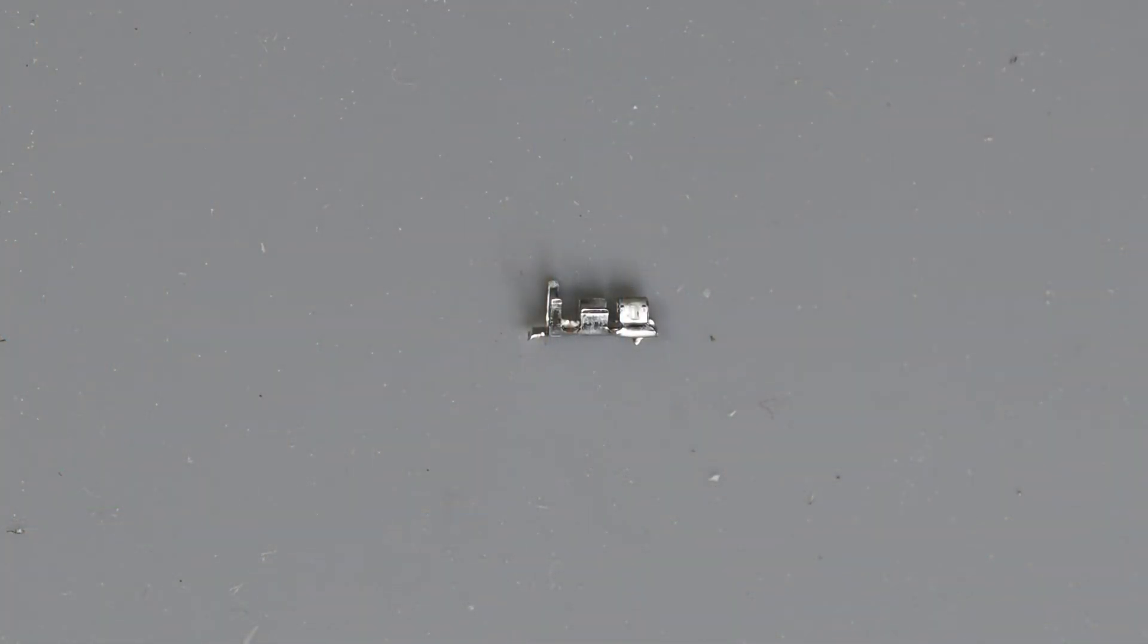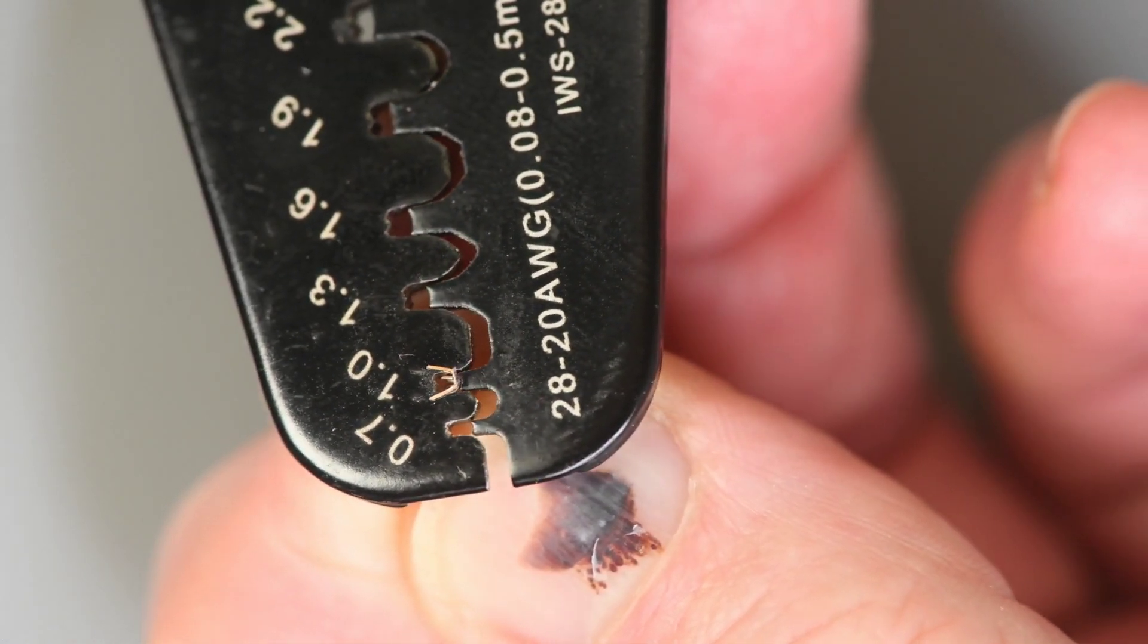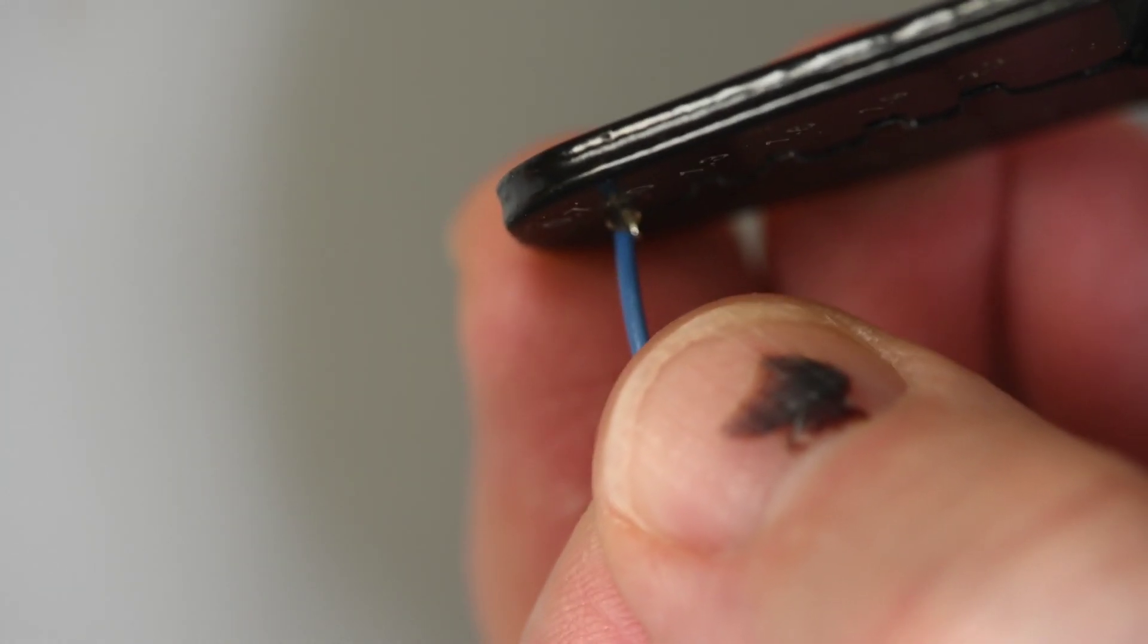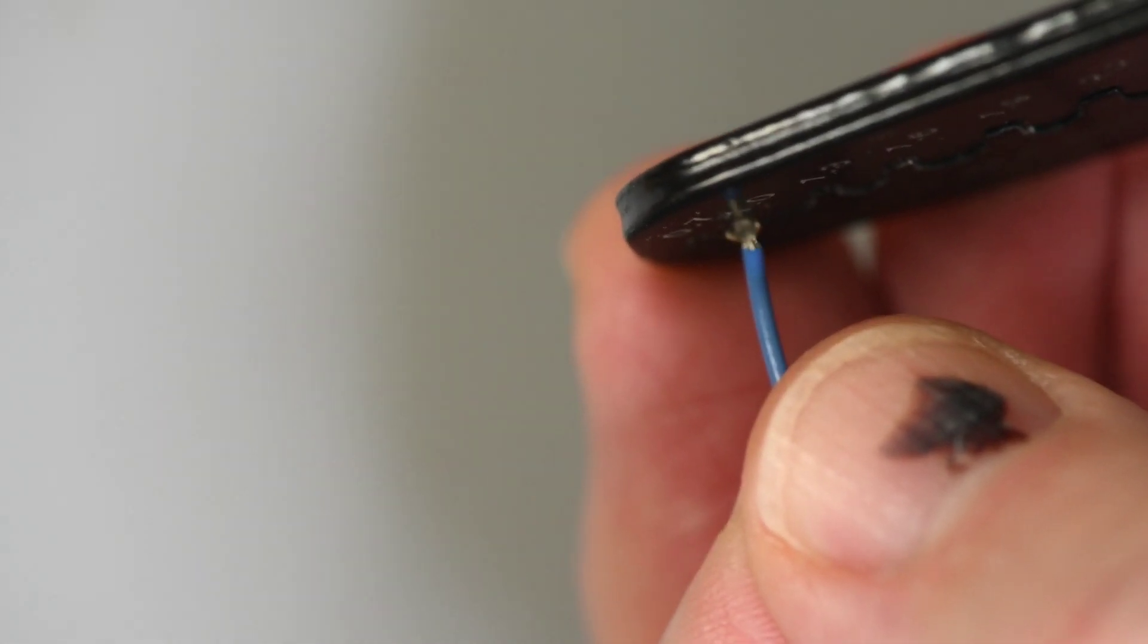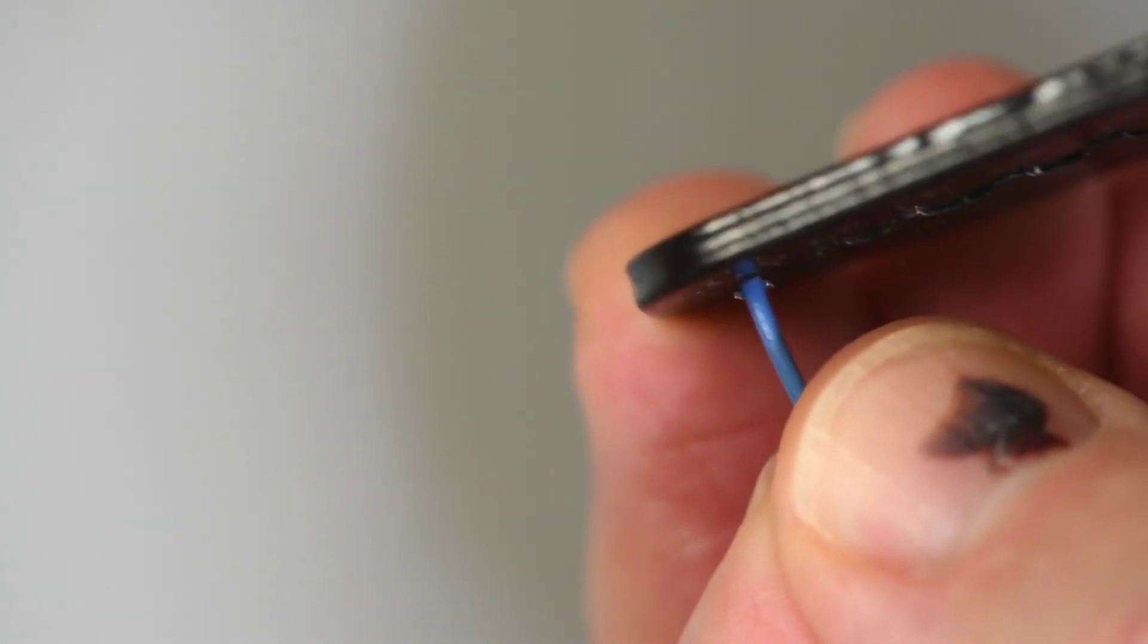Now for the JST-ZH terminals. These are used in a 1.5mm pitch connector. So not quite as dense as the Clickmate connectors. The terminal body width is a little under 1mm. So I will be using the 1mm wide die for these. Again these are small enough I really have to position the terminal and wire under the microscope to get everything in the correct position.